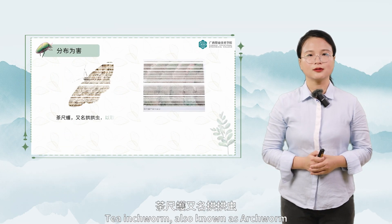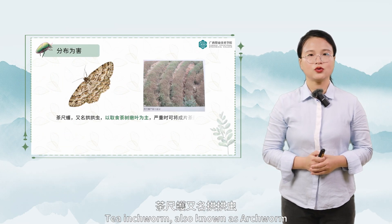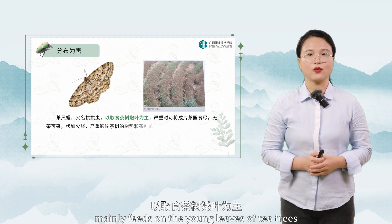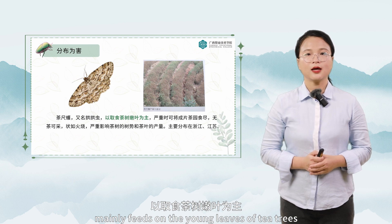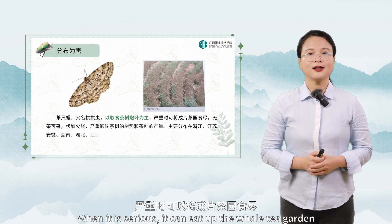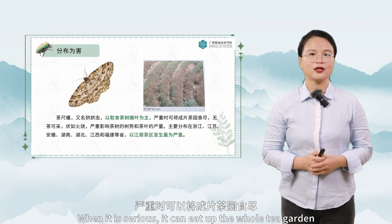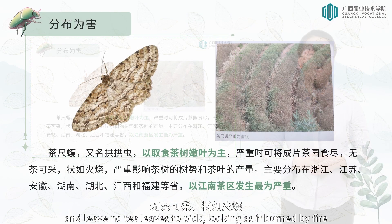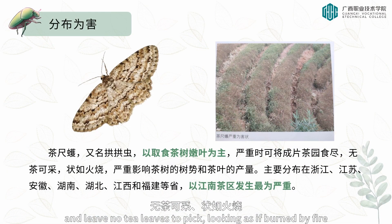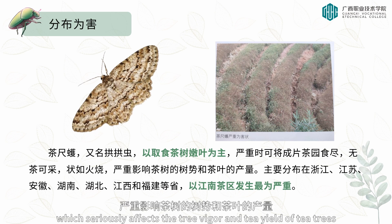Tea inchworm, also known as archworm, mainly feeds on the young leaves of tea trees. When serious, it can eat up the whole tea garden and leave no tea leaves to pick, looking as if burned by fire, which seriously affects the tree vigor and tea yield.